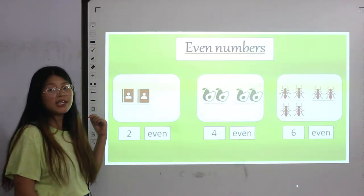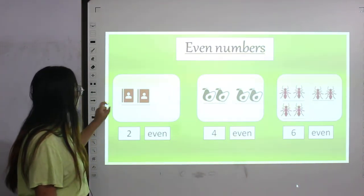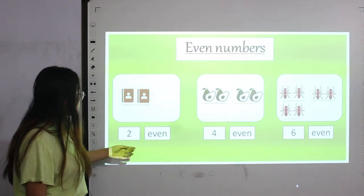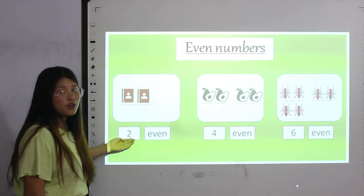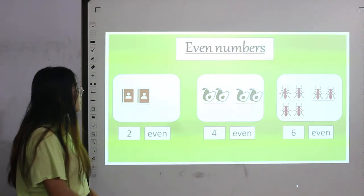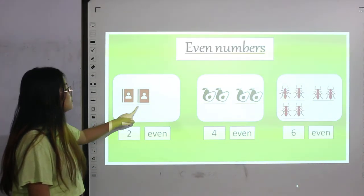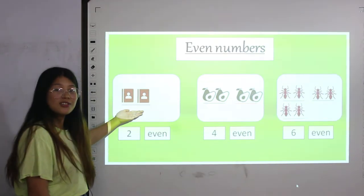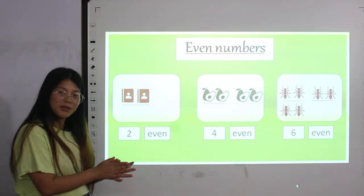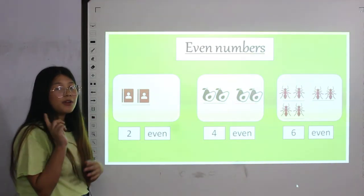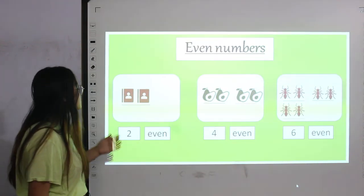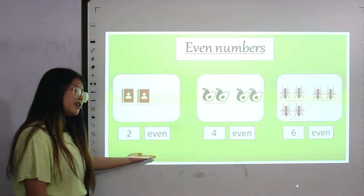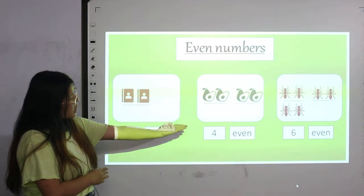Let's count how many books are over here — one and two. To see if two is even or odd: as you can see, these two books are in a pair. If it's in pair, the number is always even. So number two is an even number.